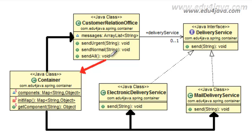This generated a dependency between the class and the container. We said that with these techniques — inversion of control and dependency injection — we were going to get rid of this dependency arrow. The object needs an instance of either ElectronicDeliveryService or MailDeliveryService, which is why it asks the container for it.